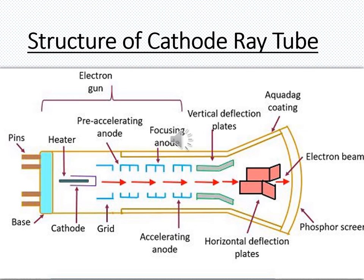When these electron beams reach the anode, there are three main types: the pre-accelerating anode, the focusing anode, and the accelerating anode. The pre-accelerating anode accelerates the electron beams toward the focusing anode, which focuses the beams so they do not divert in different directions. The beams then reach the accelerating anode where they are further accelerated and reach the vertical deflection plates.